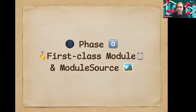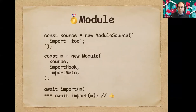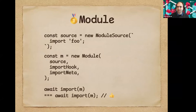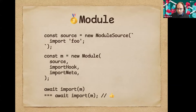In layer zero, I propose first-class modules and a ModuleSource constructor. A ModuleSource constructor returns an object representing the compiled artifact of a module source — it does not initialize or execute any code, it just compiles and analyzes a piece of JavaScript source text. With that you can instantiate it and create a module instance with a virtualized behavior for how it connects to its dependencies and what the import.meta object will be. We propose to overload dynamic import so that if it receives a module instance instead of a string, it advances it to its terminal state and returns a promise for the namespace object.